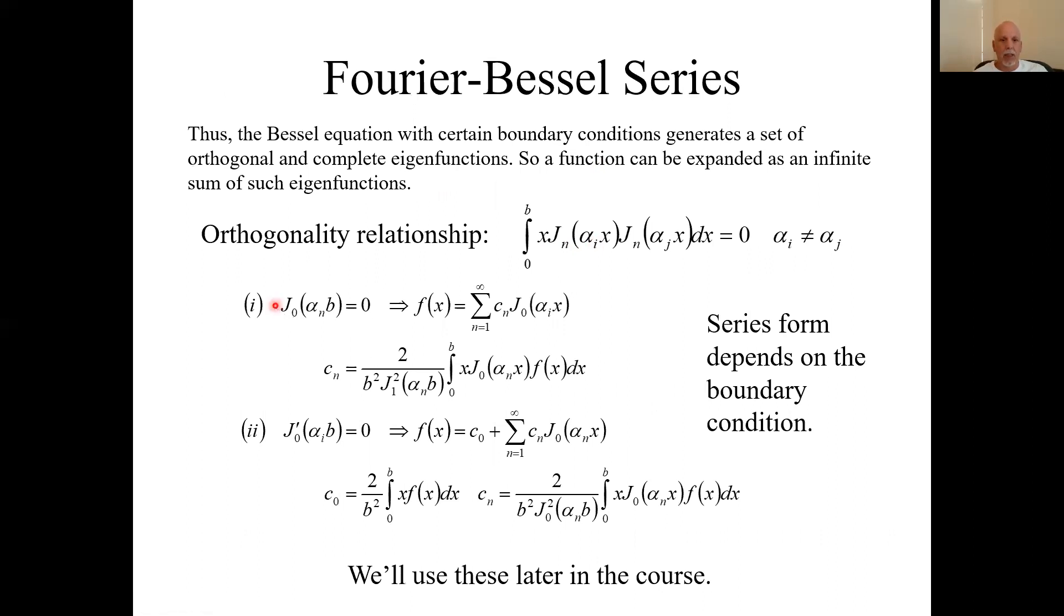How we expand a function is actually going to depend on boundary conditions we're given. If the function itself must be zero at that boundary condition at B, then here's how we expand a function. It's this infinite sum or infinite linear combination of Bessel functions of the first kind of order zero. These coefficients are found by this formula. If the boundary condition is the derivative of the function at the endpoint B, here's how we expand it. It's another infinite linear combination, with these formulas for computing coefficients.